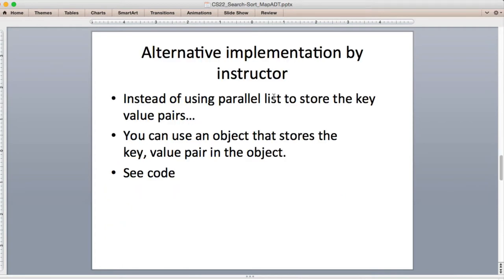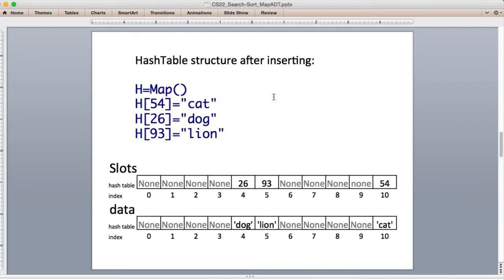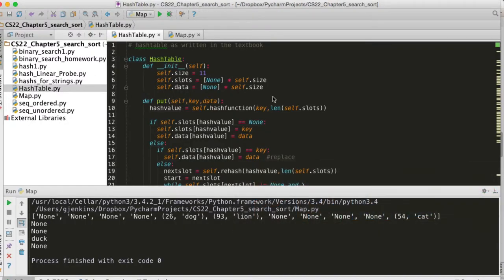Now as an alternative way of doing this, instead of using two lists, you can just use one list and store an object that has the key and value inside the object. So let's step away here and look at these two different versions. This is the first version in the hash_table.py, and this is the code exactly as it's written in the book. So you'll see it sets the size, sets slots equal to a new list which is size long, and sets data to a new list which is size long.